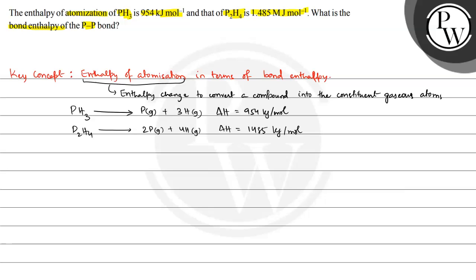Now, here is the structure of PH3 that is like this: P, H, H and H. Here 3 P-H bonds break. This is equal to 3 multiplied by the bond enthalpy of P-H.